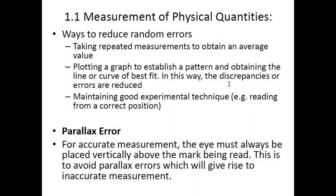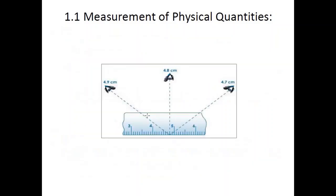Parallax error is a type of systematic error that occurs when you do not look at your scale at a right angle. Your eye should always be perpendicular to the scale. If you view from different angles, your answer may be smaller or greater than the actual value. Always avoid parallax error.